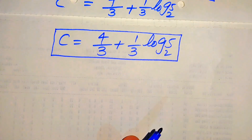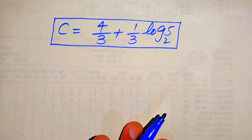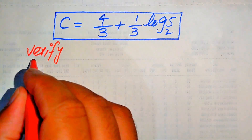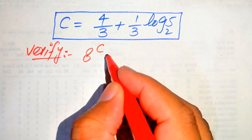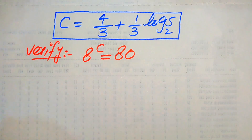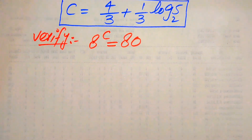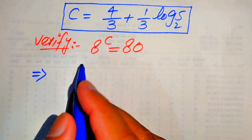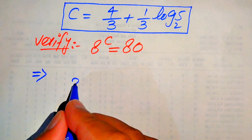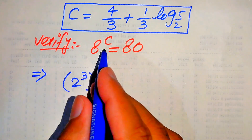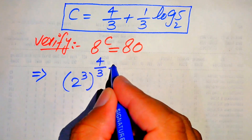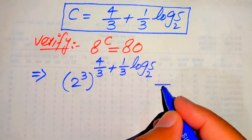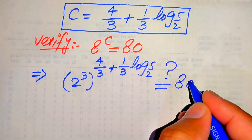Now in the next step we need to verify this value of C and check whether it satisfies the original equation. For verification, we copy down the given equation: 8 to the power of C equals 80. We substitute the value of C into the left hand side, writing 8 as 2 cubed, with the whole exponent being C, which is 4/3 plus 1/3 times log 5 base 2.